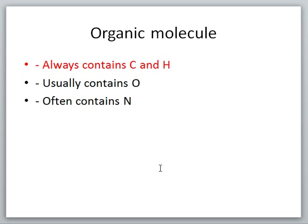Notice right here, if something's in red, there's a good chance that you need to know that particular information for the exam. Organic molecules always contain carbon and hydrogen. For example, methane gas, which is CH4, would be an organic molecule. Carbon dioxide, which is one carbon and two oxygens, is not an organic molecule because it does not contain hydrogen. So an organic molecule is going to contain both carbon and hydrogen.